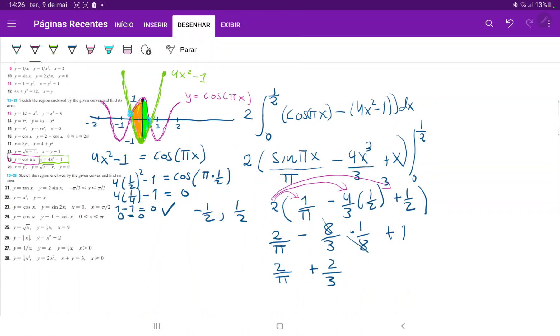This is our final answer. Let me zoom out so you can see the full picture. We found that by drawing our curves, setting these equations equal to each other to find the bounds of integration, and then integrating the upper function minus the lower function.